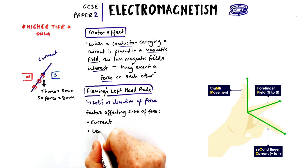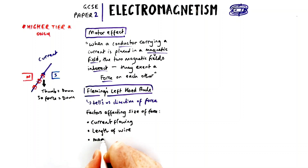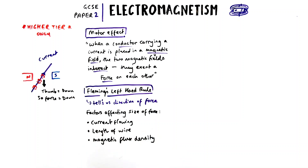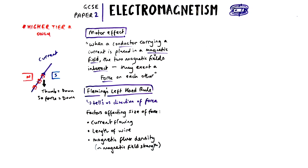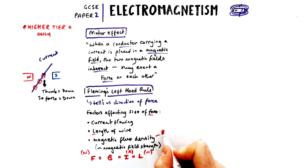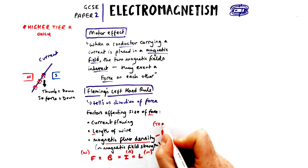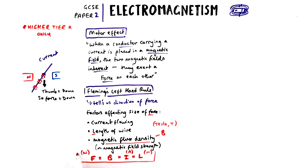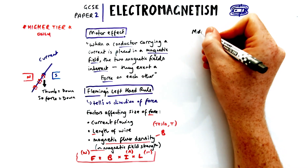Factors affecting the size of the force in the motor effect are the current flowing, the length of the wire, and something called the magnetic flux density — which is essentially the same thing as magnetic field strength. If I reverse any of these factors, the force would also reverse. The equation governing the motor effect is F = BIL, where F is force in newtons, I is current in amps, L is length in metres, and B is magnetic flux density measured in tesla (T). Typically you'll find milliteslas or 0.01 teslas rather than hundreds of teslas.